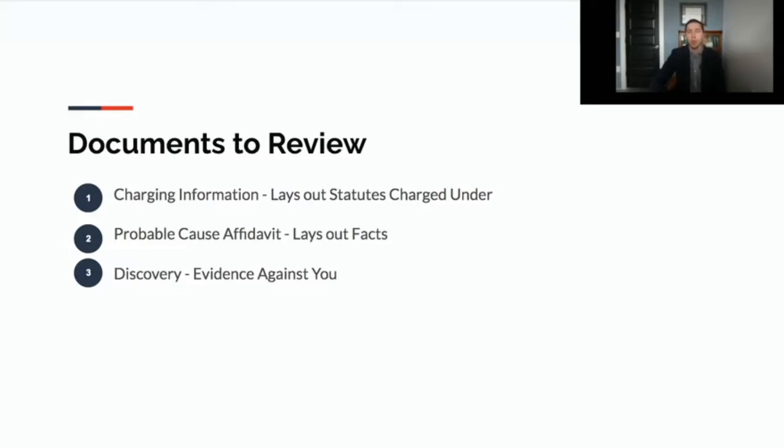So if you've been charged, there's a few documents you should review at the start of your case. First, there's the charging information. This is the document that state files that lays out the statutes that you're charged under. And it's a brief summary of the facts that the state would need to prove to show that you committed the alleged offense. The second thing you want to look at is the probable cause affidavit. It's a longer summary or narrative that talks about what happened in the alleged offense. And typically, it's sworn by the arresting officer and submitted by the prosecutor. And the third thing is the discovery. You want to see the discovery in your case. You may not have it at the beginning, but within the first couple of months of your case, you want to be asking, where's the discovery? What's the evidence they have against me? And you want to start looking into those things.